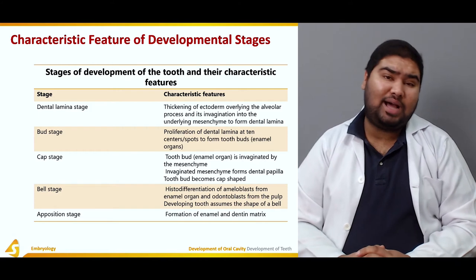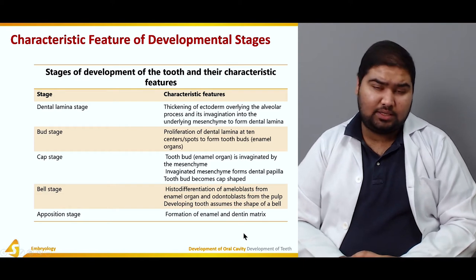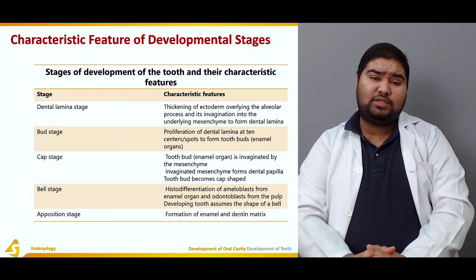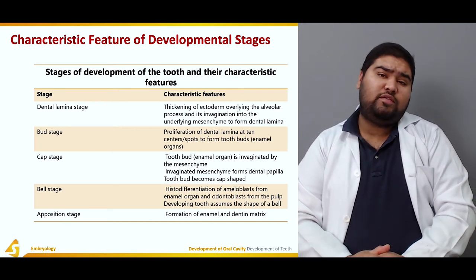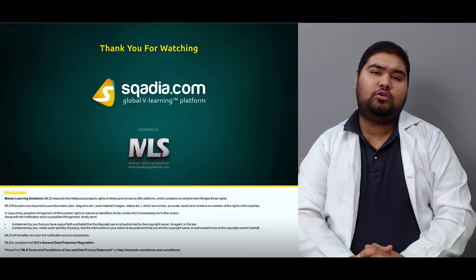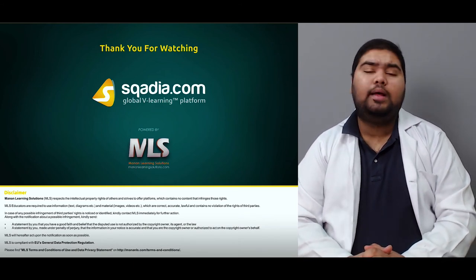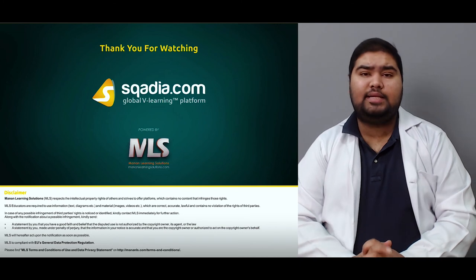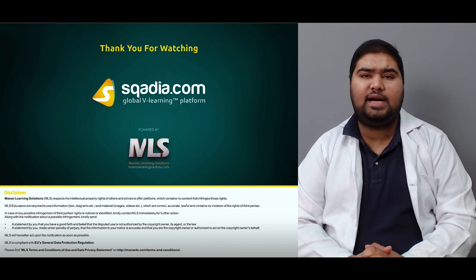The apposition stage is the last stage, in which there is formation of enamel and dentin matrix. These are the five stages of development of the tooth, and both will be dealt with in detail shortly. In this section, we talked about the two types of teeth — the adult teeth and the deciduous or milk teeth — and we saw how development of teeth takes place and what are the various steps. The steps will be taken up in detail in the next section. Keep watching scardio.com.